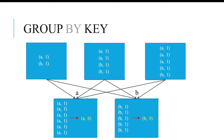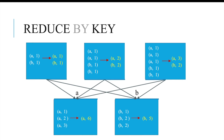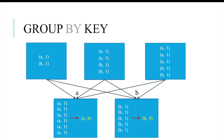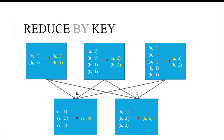To recap: groupByKey has lower performance because the combiner runs after the shuffle. With reduceByKey, the combines happen at the local partition level during the map operation, and only after that does the shuffle occur. This is the key difference — reduceByKey is much faster than groupByKey.